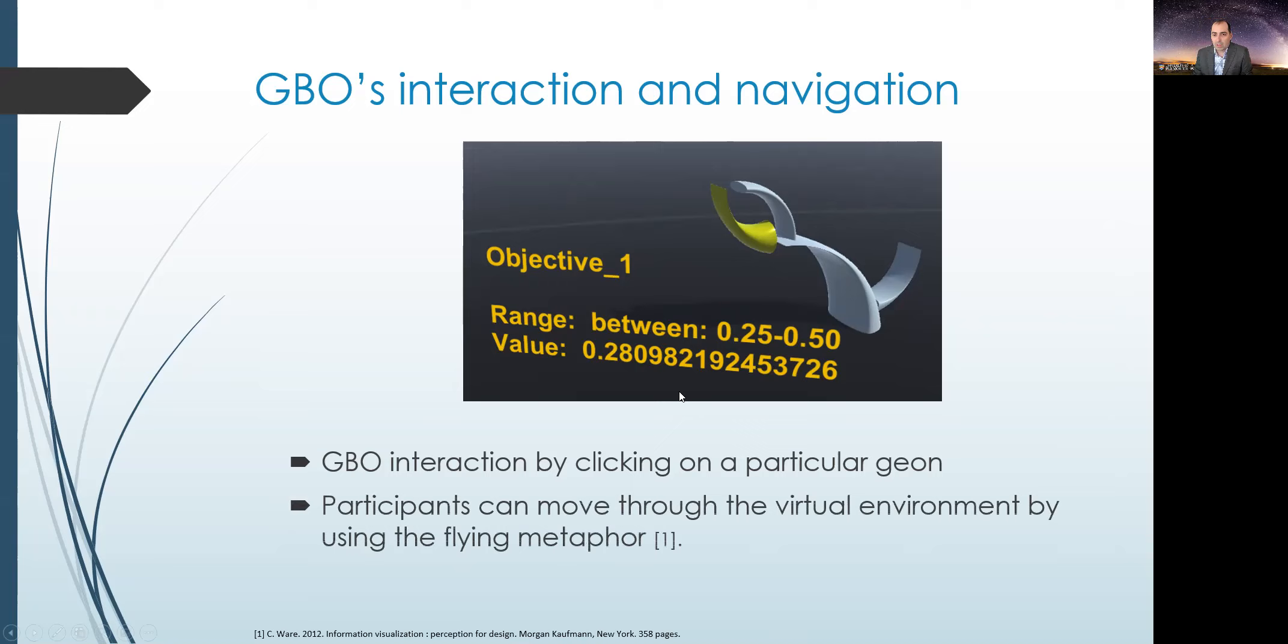One of the other elements that we added, it was important to add, is to enable participants to move around the environment for a better point of view. For that, we use the flying model, which is typical of the first person controller found in gaming environments, but with the additional benefit that the users can explore space freely by flying and not by being limited to ground level locomotion.